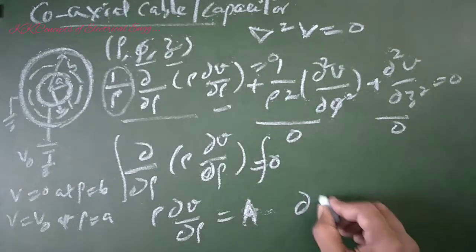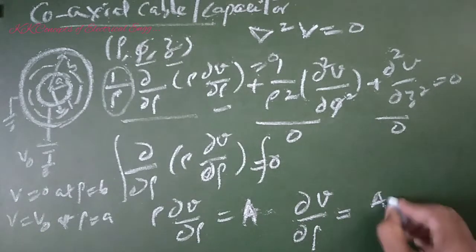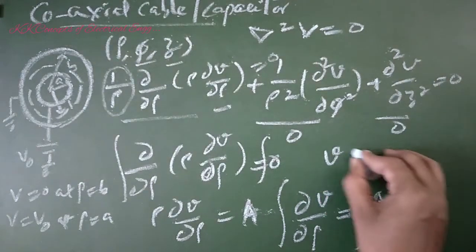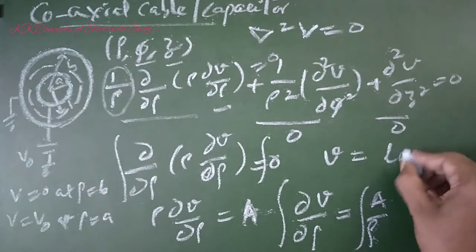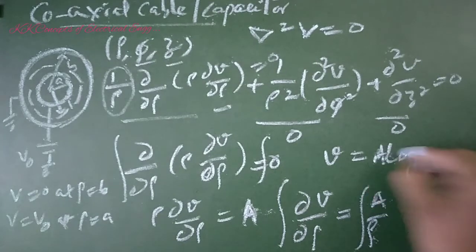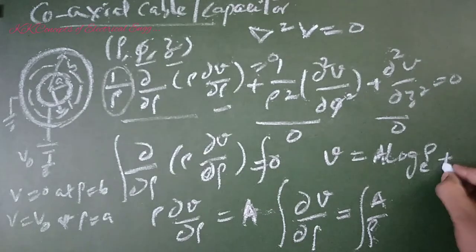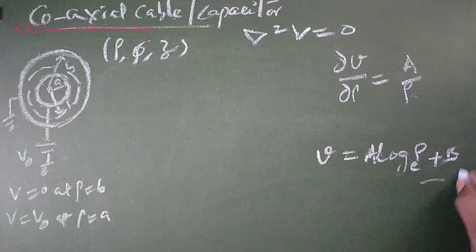Then ∂V/∂ρ equals A/ρ. Now when you integrate this again, you get V equals A log ρ + B. Let this be equation number 1.